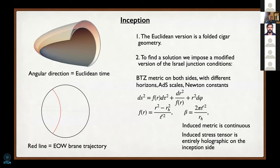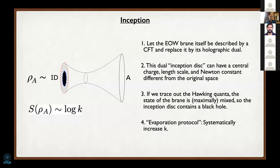To construct this geometry you impose modified Israel junction conditions. You require that there's a BTZ metric on both sides, the metric is continuous, the induced metric on the end-of-world brane is continuous on both sides. Because this inner inception part is supposed to be the holographic description of the end-of-world brane, the boundary stress tensor of this inception geometry should be entirely holographic. You can construct various scenarios: a tensionless brane, a tension-full brane, including non-holographic components of the stress tensor—and modify the matching conditions appropriately.